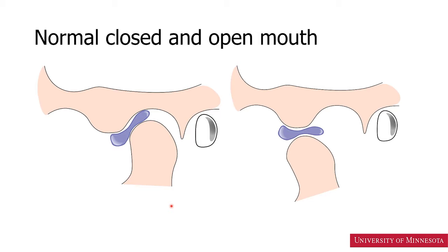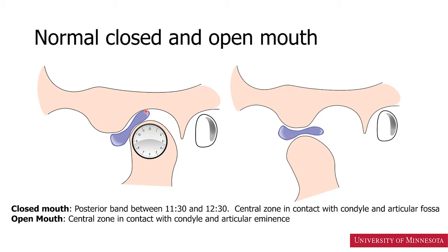These cartoons show the position of the disc in relationship to the condyle, articular fossa, and articular eminence — closed mouth and open mouth. A normal disc is a bowtie-shaped structure with a posterior band, an anterior band, and a narrow central zone. If we consider the condylar head as a clock face, the posterior band of the disc is located between 11:30 to 12:30. The central zone of the disc is in contact with the condyle and the articular fossa — this is the normal disc relationship.